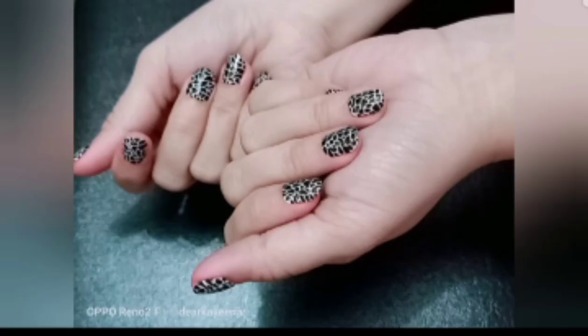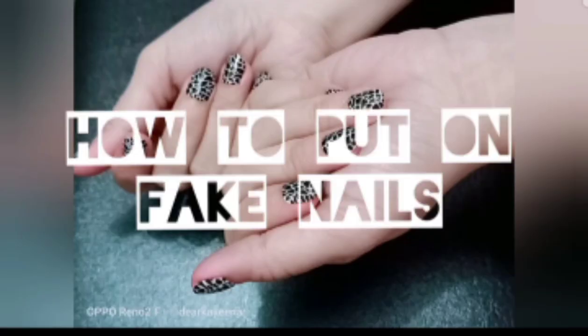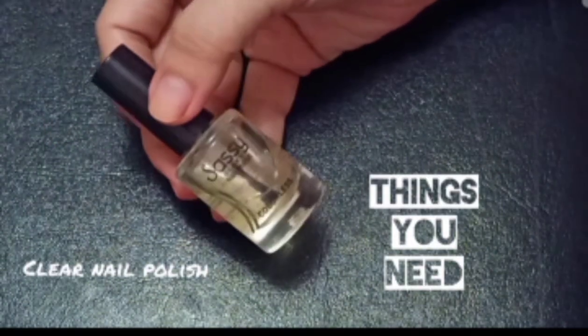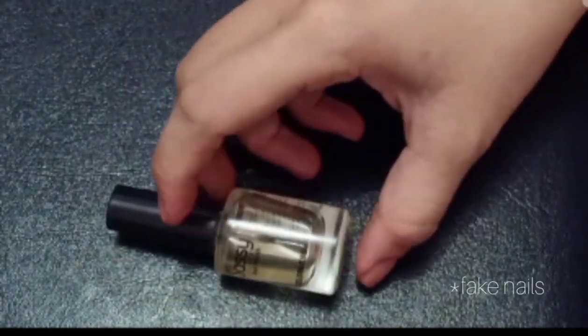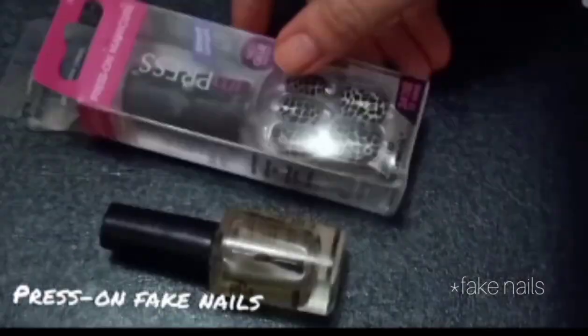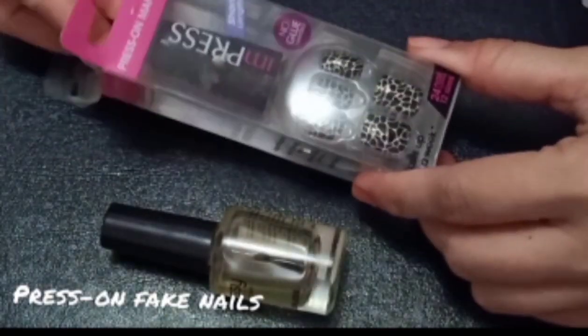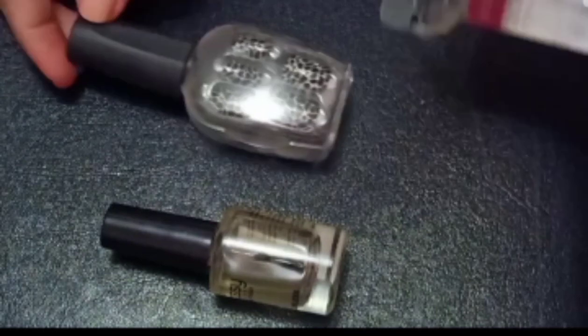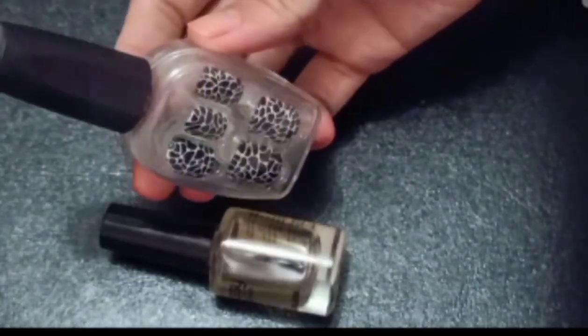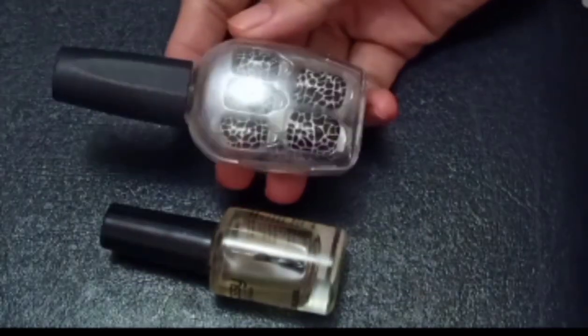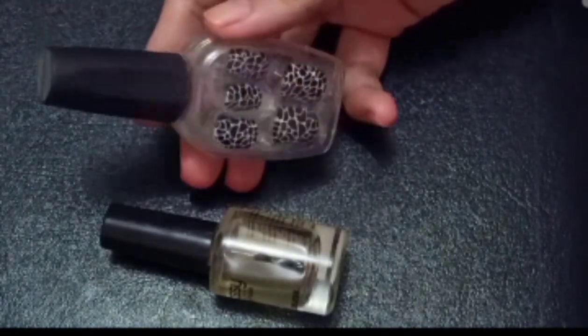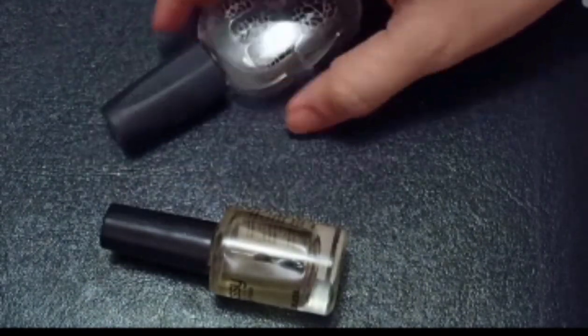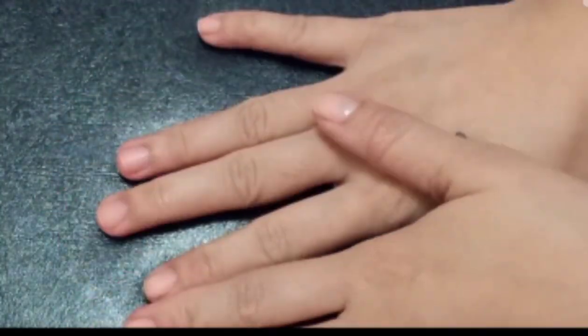Hi everyone, welcome back to my channel. In today's video I'm going to share with you how to put on this Broadway press-on nail polish. The things that we need are this clear nail polish and of course your Broadway press-on nails that already have a sticker behind it, so it's very easy to put this on.